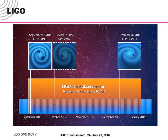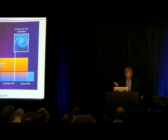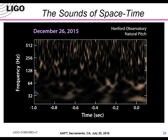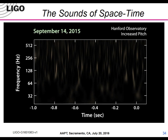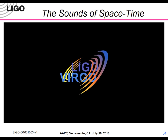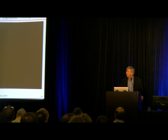Now I'll play the sound for the two confirmed events, this time playing the underlying waveform rather than the raw data stream. The December event comes in at natural pitch, and then shifted up by 400 hertz. Just by those sounds you can tell you're looking at binary black hole mergers — there's a lot of information encoded in them.